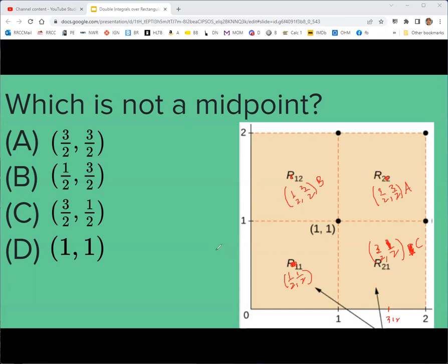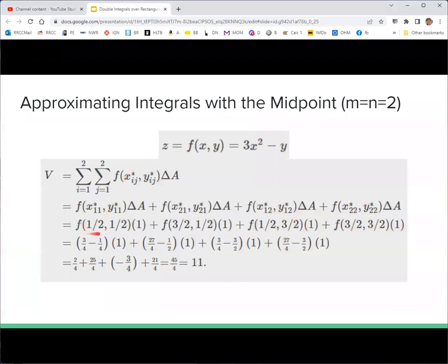And we would evaluate the function at those points. And it would look like this. So there's one half, one half, three halves, one half, one half three halves, three halves, three halves. And then we just take those coordinates and put them in the function and you get some function value. And then everything's multiplied by one to make it have the volume that we wanted. Then you add them all up and we get an approximation of 11. So 11 is an approximation of the volume between the surface, this function and the xy plane.